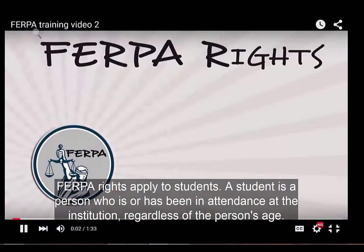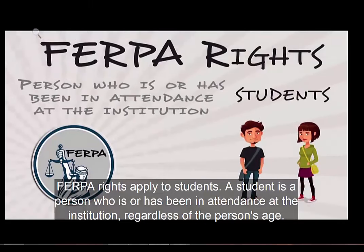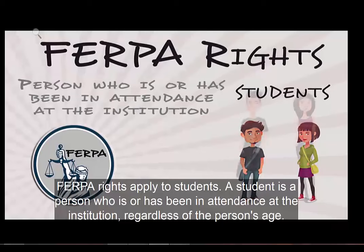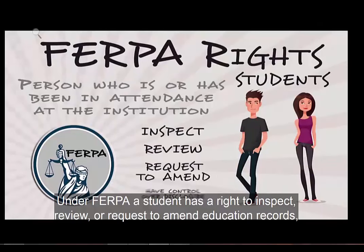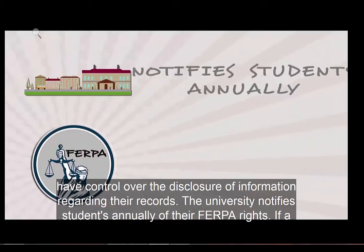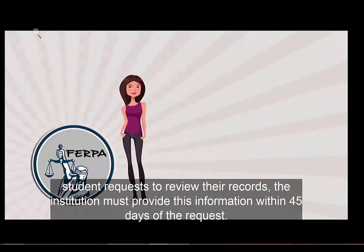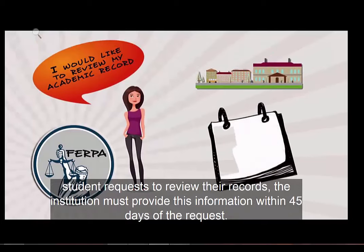FERPA rights apply to students. A student is a person who is or has been in attendance at the institution regardless of the person's age. Under FERPA, a student has a right to inspect, review, or request to amend education records, and to have control over the disclosure of information regarding their records. The university notifies students annually of their FERPA rights. If a student requests to review their records, the institution must provide this information within 45 days from the request.